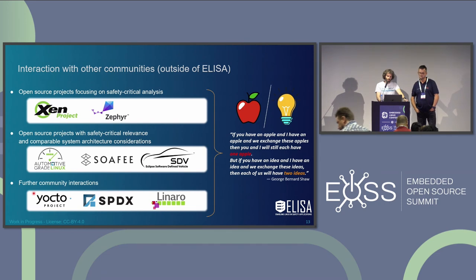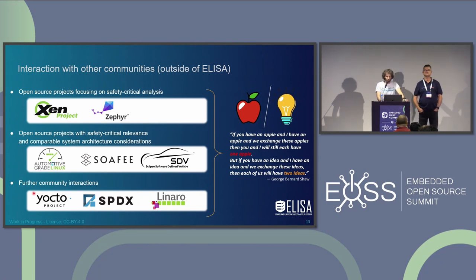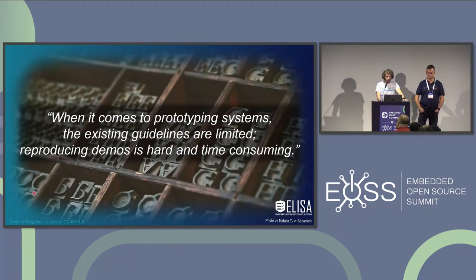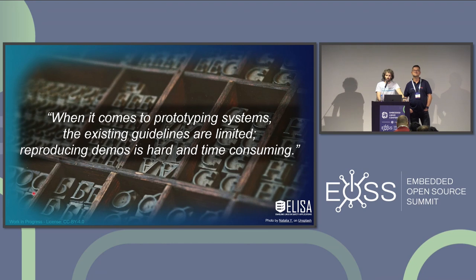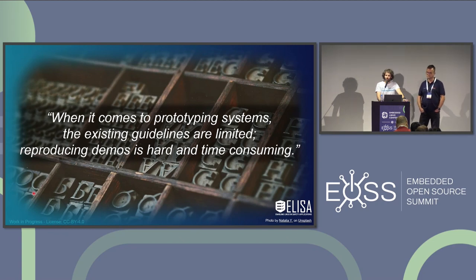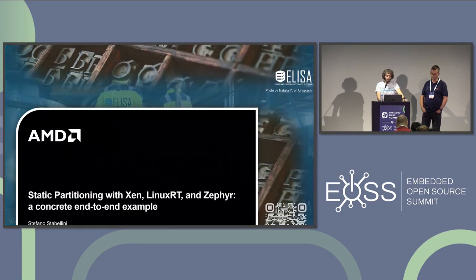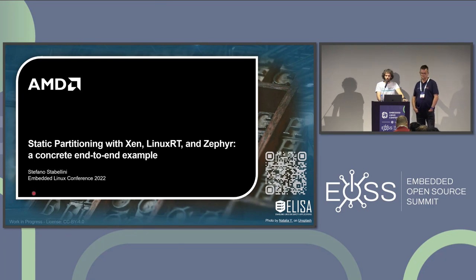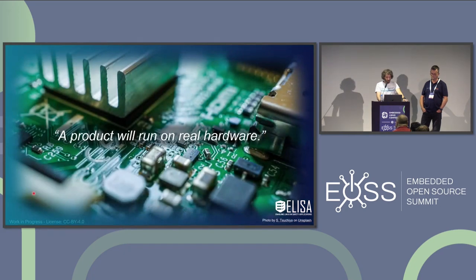The overall idea: if you exchange an apple with me, we both still have one apple. But if we exchange ideas, each person has two ideas. Based on this, we want to prototype these kinds of things. This was also a lesson when discussing with AGL, with partners, with Xen — the main question is: how do I try these things out? This was basically the story Stefano presented last year in Austin during the Open Source Summit, covering QEMU, and then came the brave idea: let's put all this on hardware. How hard can it be?